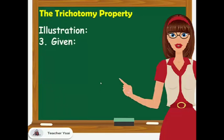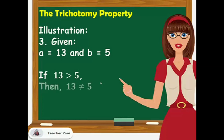Third example for the trichotomy property: if A equals 13 and B equals 5, if 13 is greater than 5, then 13 is not equal to 5, or 13 is not lesser than 5.